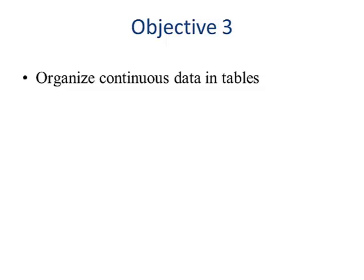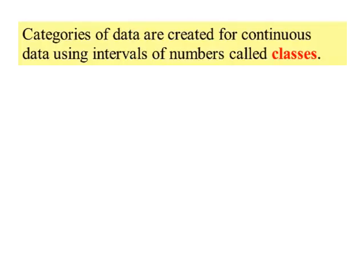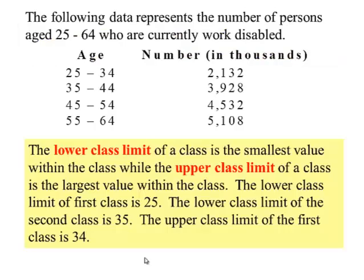Lesson objective number three. Categories of data are created for continuous data using intervals of numbers called classes. So here's an example.